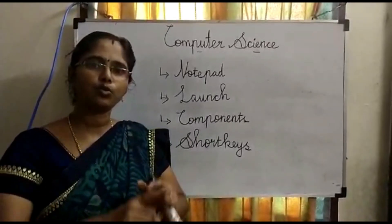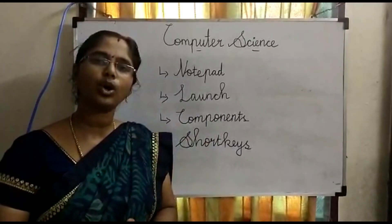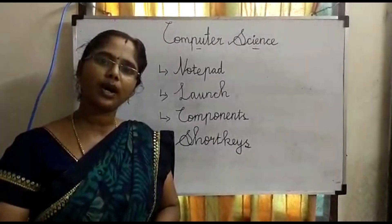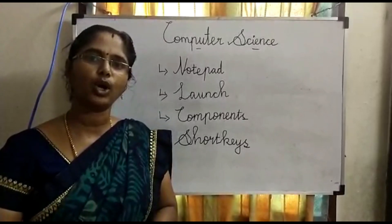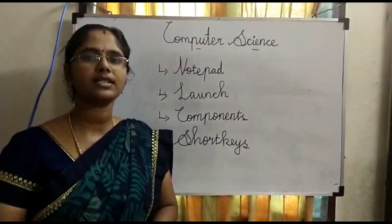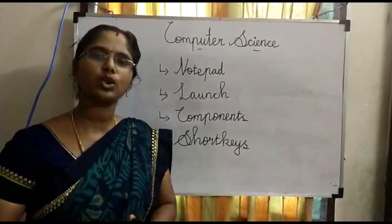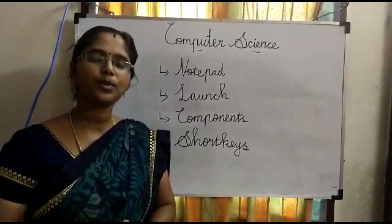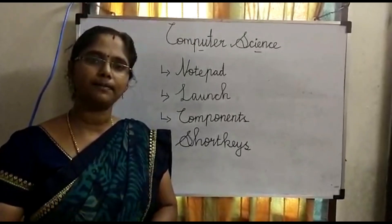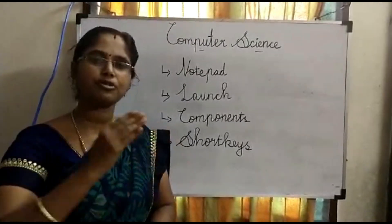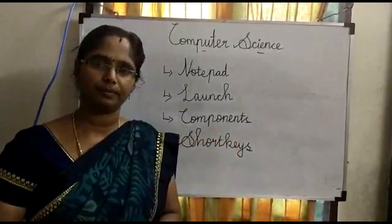The menus include File, Edit, View, and so on. The white blank area is called the Text Area, where we type our text. You should also remember the cursor and the mouse pointer symbols. We also have two types of scroll bars: the Vertical Scroll Bar, which moves the page from top to bottom or bottom to top, and the Horizontal Scroll Bar, which moves the page from left to right or right to left. These are the main components of Microsoft Notepad.